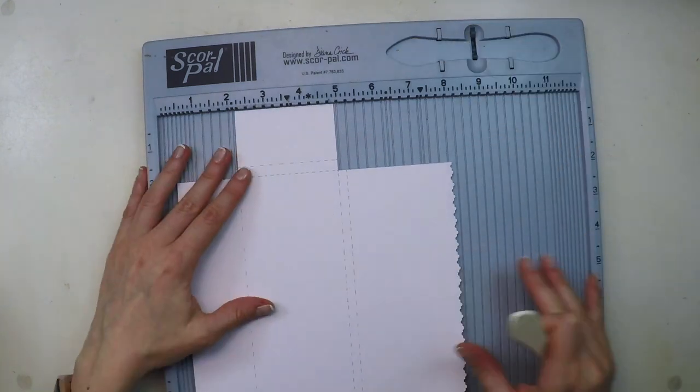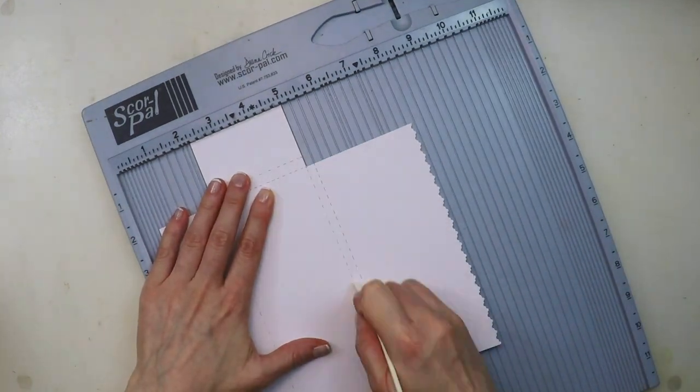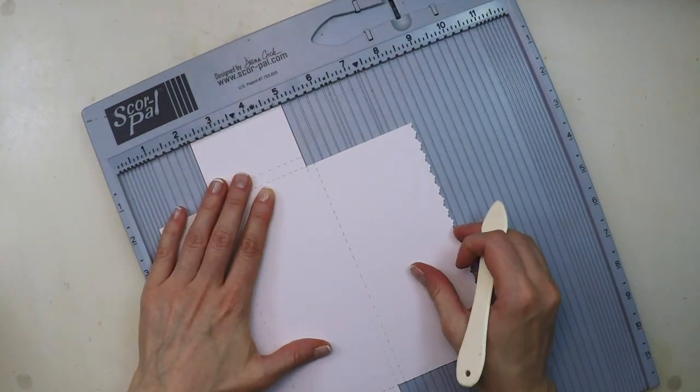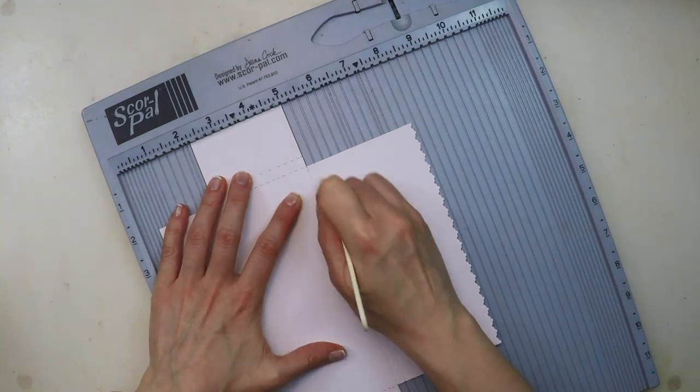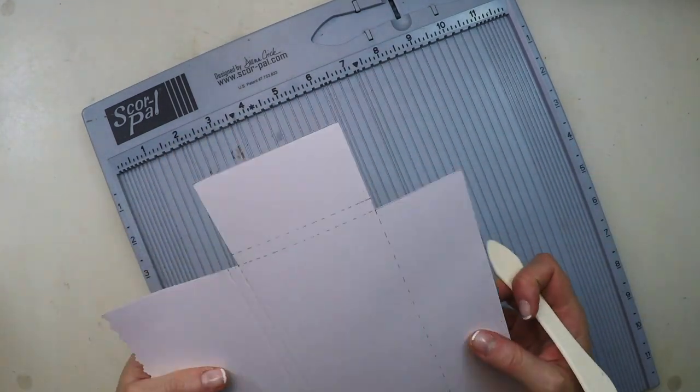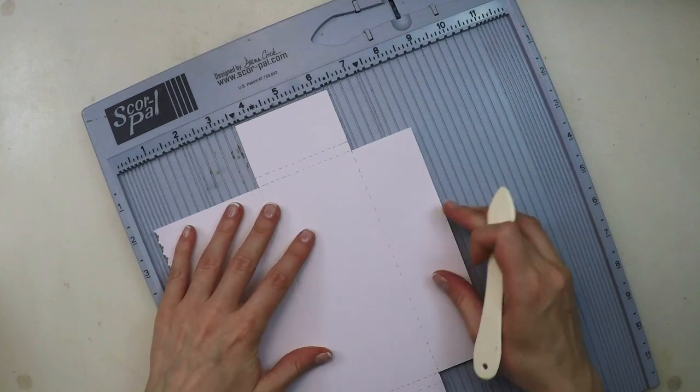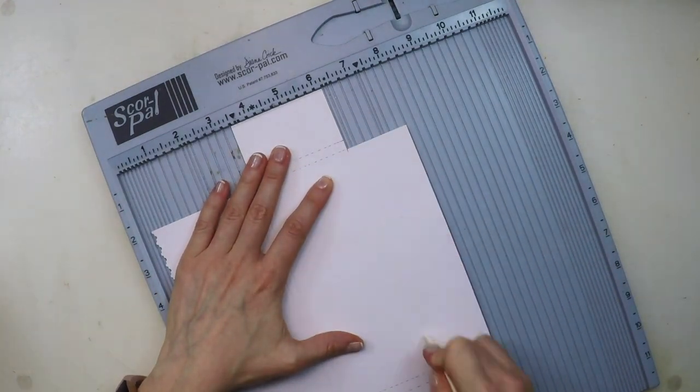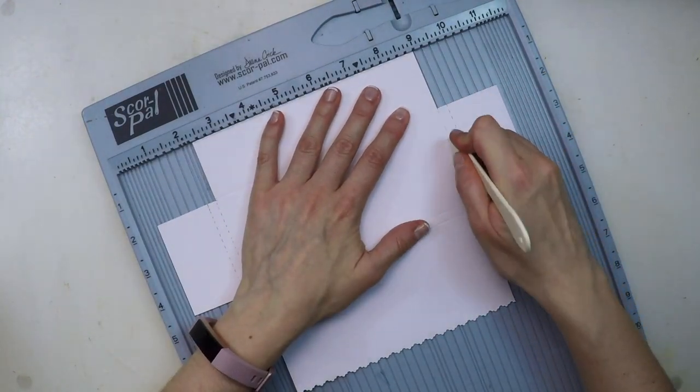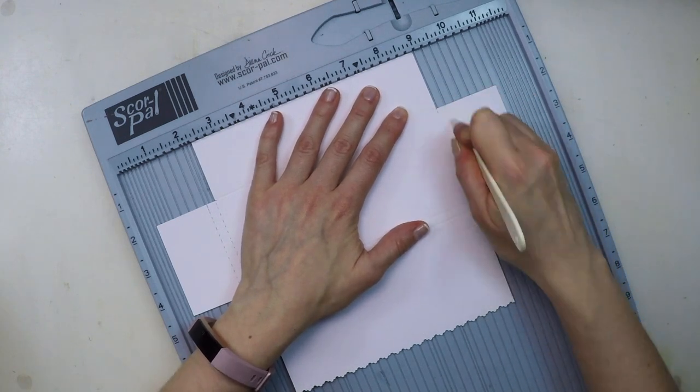The next step is actually score the lines that are dotted. I used a friction pen so you'll see that the lines disappear when I marked them. So basically I'm scoring all of them and since the cardstock is so heavy I will score them also on the other side.